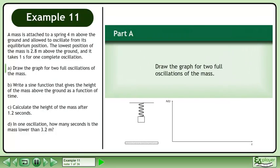A mass is attached to a spring 4 meters above the ground and allowed to oscillate from its equilibrium position. The lowest position of the mass is 2.8 meters above the ground and it takes 1 second for one complete oscillation.